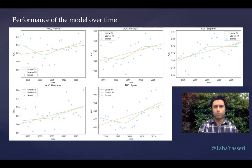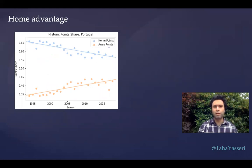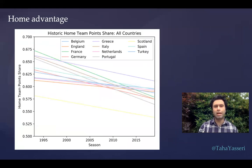All of them show a kind of upgoing trend in the level of predictability we could quantify. Looking at the home advantage — the offset of the curve, which you can also measure directly from the data — you see that home advantage has decreased over time. It doesn't matter where you play; if you're a strong team, you're going to win.